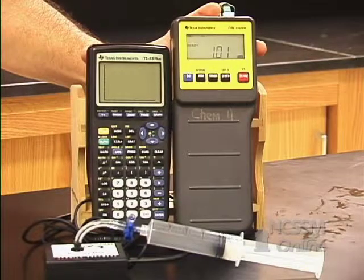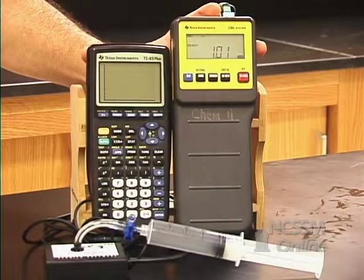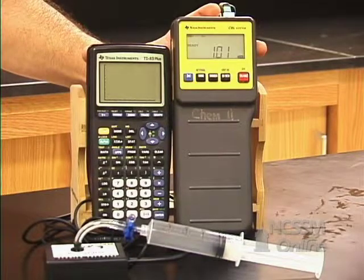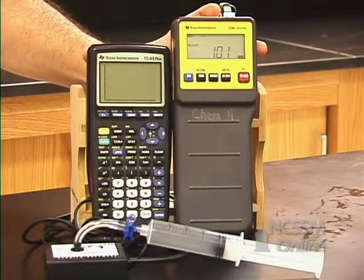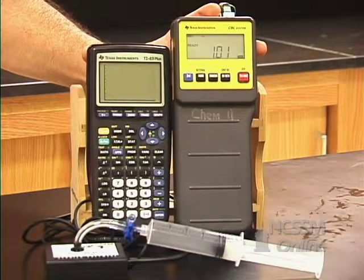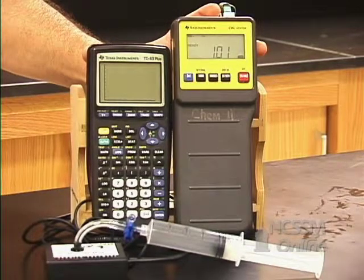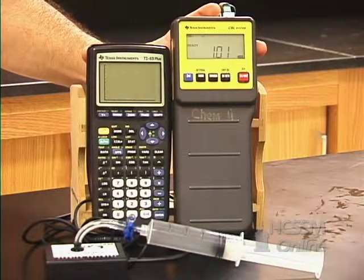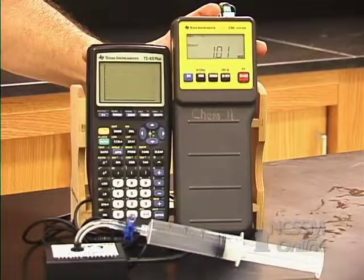As we increase the pressure on the gas, the pressure will be read by a pressure sensor. The pressure sensor sends a voltage signal to the CBL. The CBL acts as an analog to digital converter, which converts the voltage reading into a pressure reading. The pressure and the volume are graphed on the calculator.